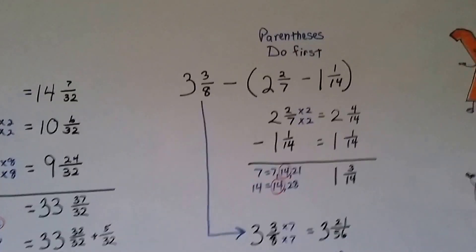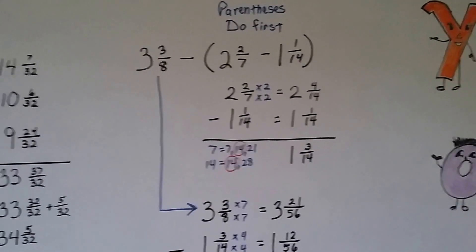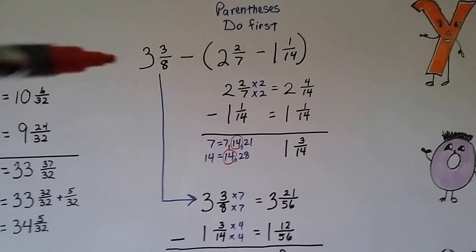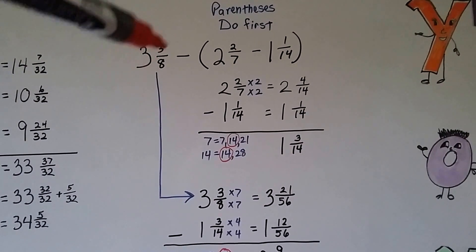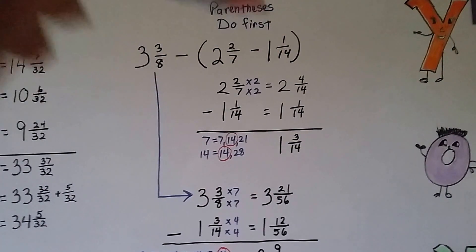Now, this is where I made my error. I used to have a plus sign here and it was supposed to be a subtraction problem. And I did subtraction even though there was a plus sign there. So now we're going to do it the right way. We have 3 and 3 eighths. And we're trying to subtract 2 and 2 sevenths minus 1 and 1 fourteenth.